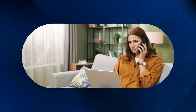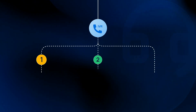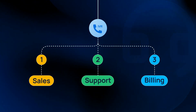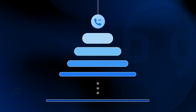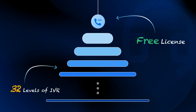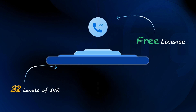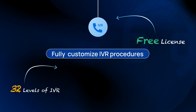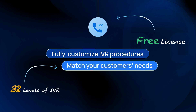The first station for an incoming call is IVR, which allows you to easily create customized call flow paths, guiding callers to the appropriate department or information. Yastar offers 32 layers of IVR without the need for additional licenses, empowering you to fully customize IVR procedures to match your customers' needs.